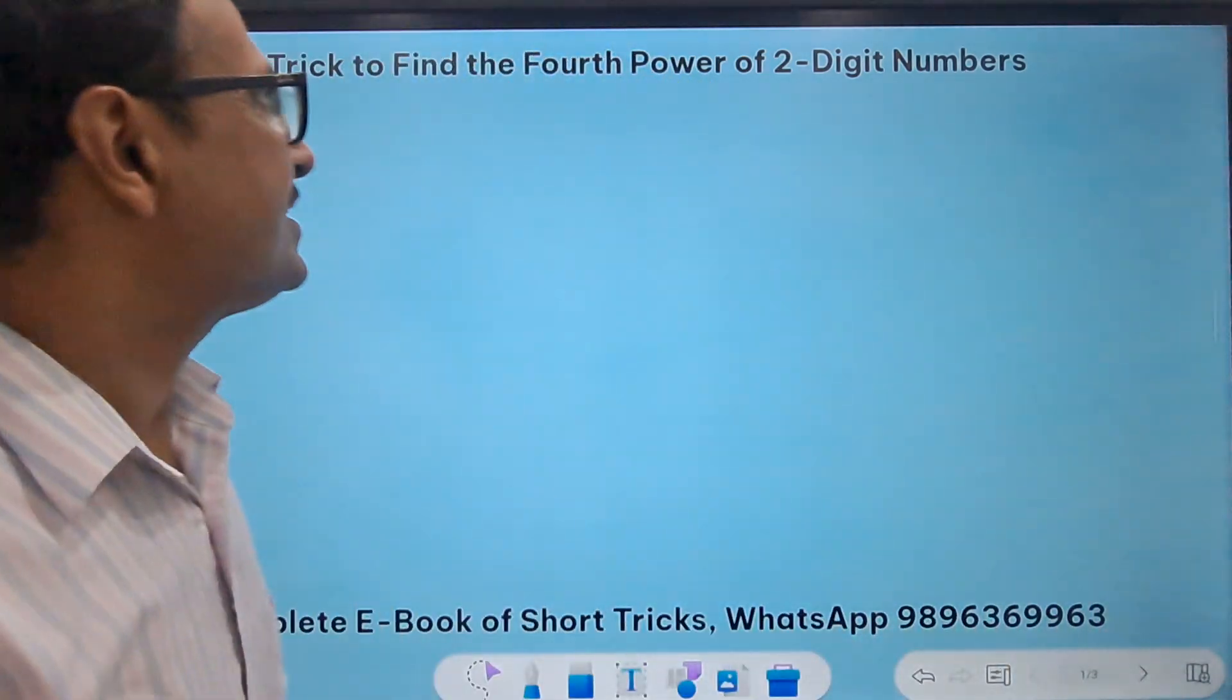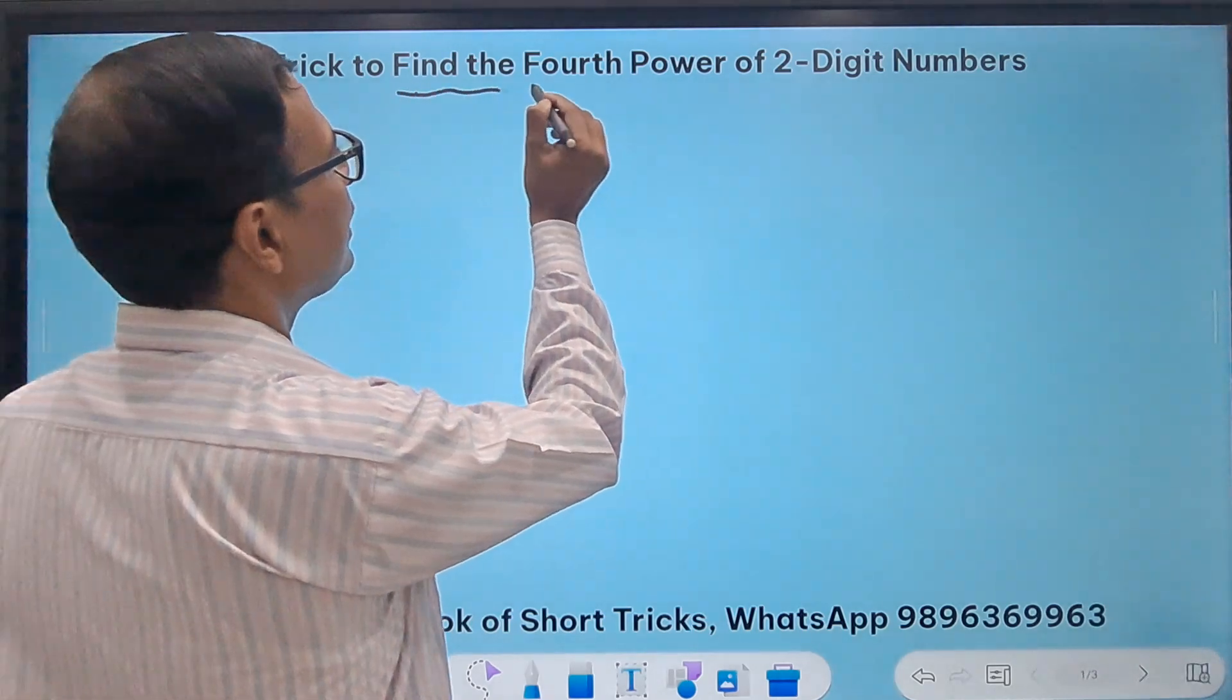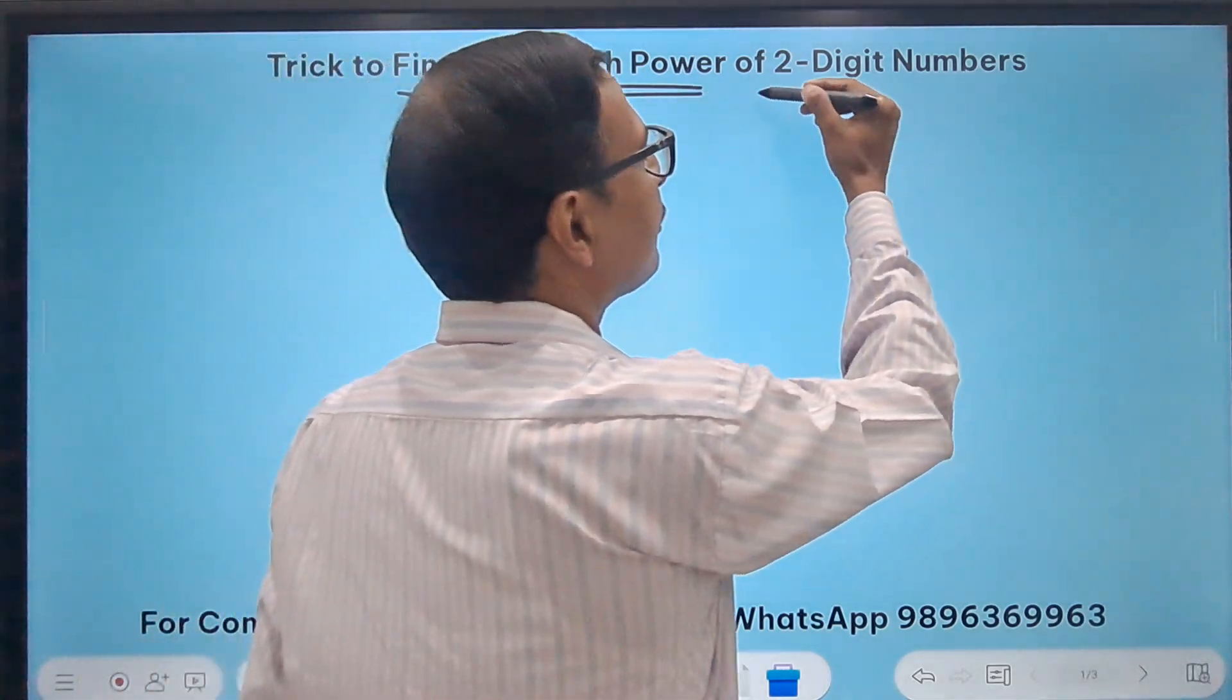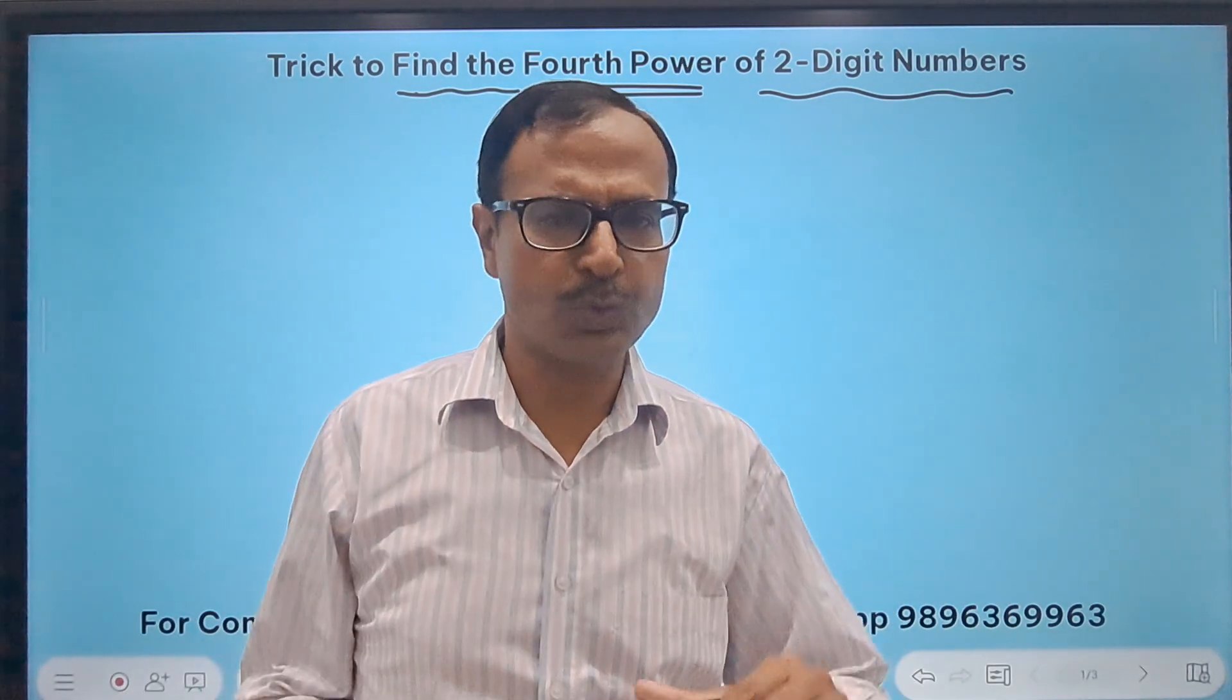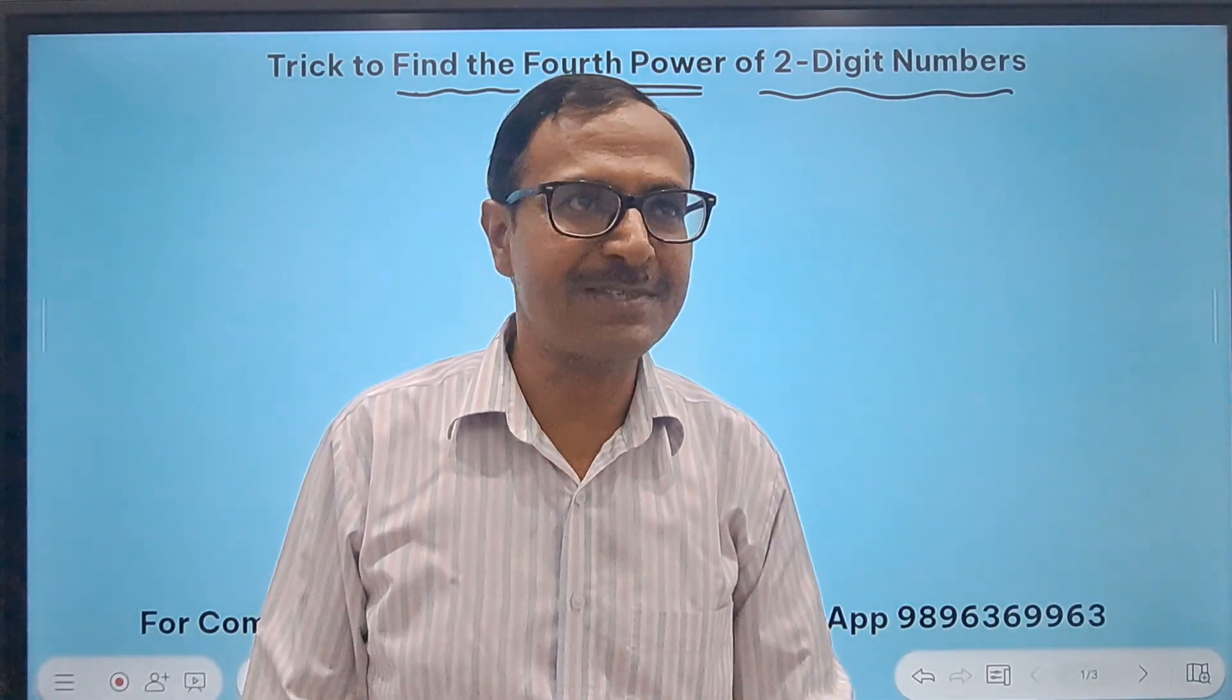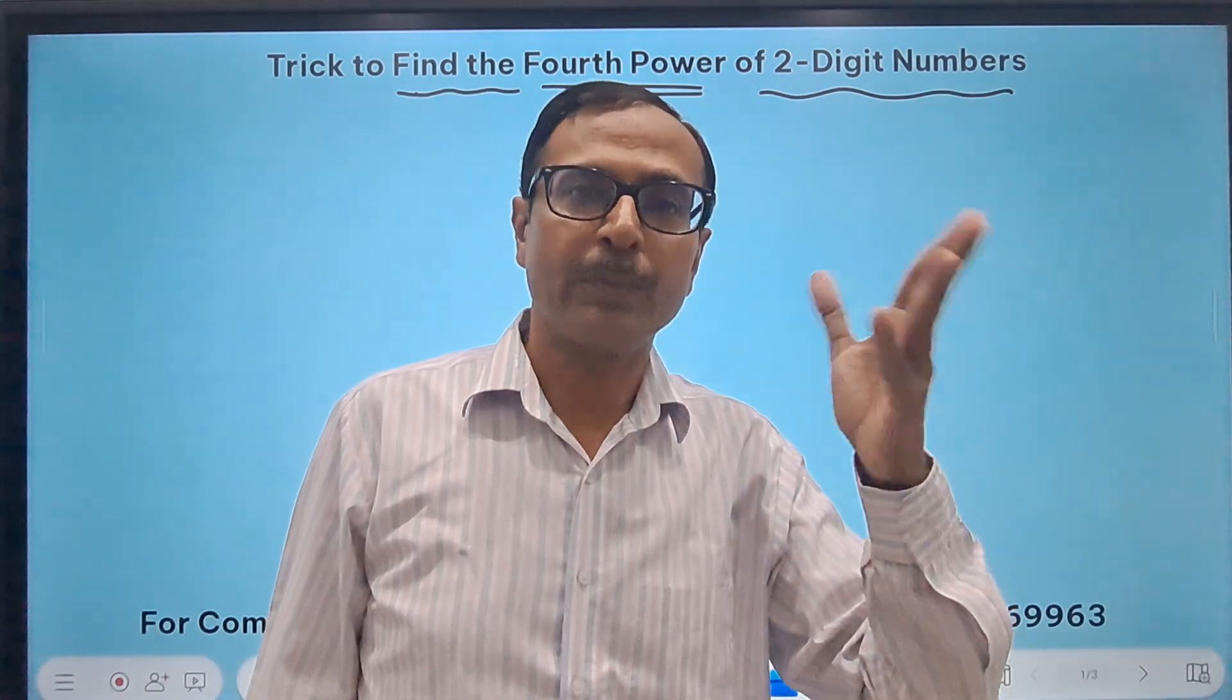So let's get going and see what we have in this video. We are going to find the fourth power of two-digit numbers, so the result, the final answer, is going to be a big number. Even if you take 10 raised to power 4, it is 1 followed by 4 zeros, so 10,000.